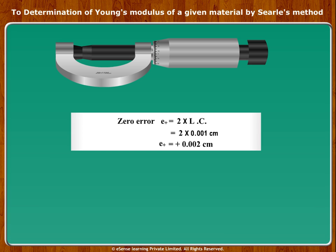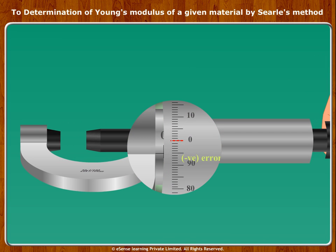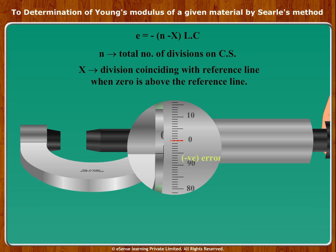Here the second division coincides with the reference line. Hence, zero error correction E+ is equal to 2 into LC, equal to 0.002 centimeter. You may get the 0 of the circular scale above the reference line; in that case the error would be negative. The formula for calculating negative error is: E equals minus (N minus X) into LC, where N is the total number of divisions on the circular scale and X is the division coinciding with the reference line when 0 is above the reference line. Please note: negative error is to be added to the total reading.